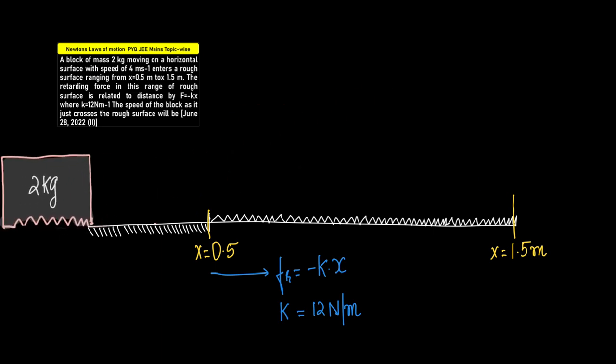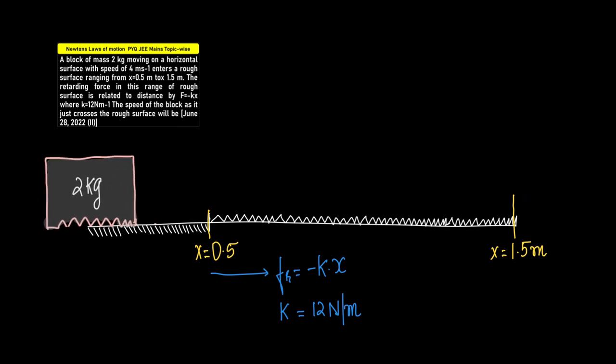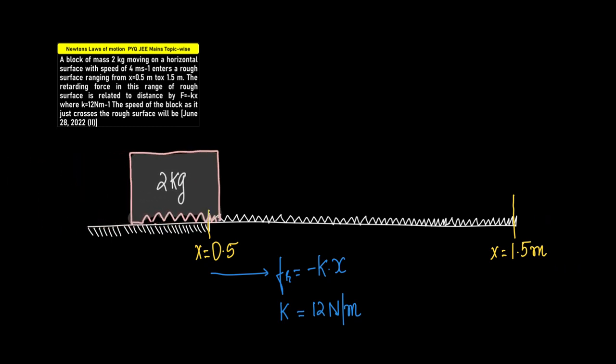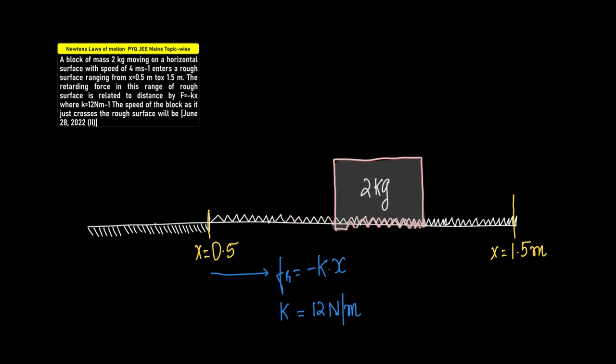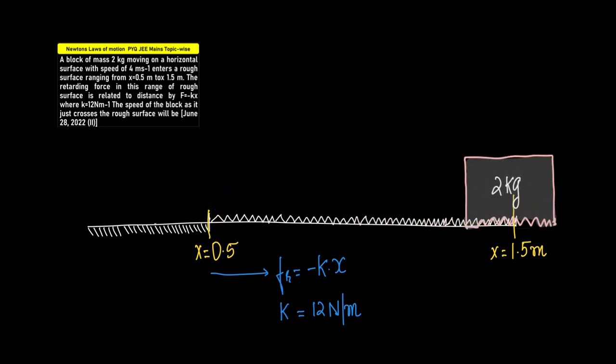So it's smooth body, it's moving on a smooth surface and then it encounters a rough surface wherein the motion is retarded and the velocity should of course gradually decrease and it would come to some value over here.